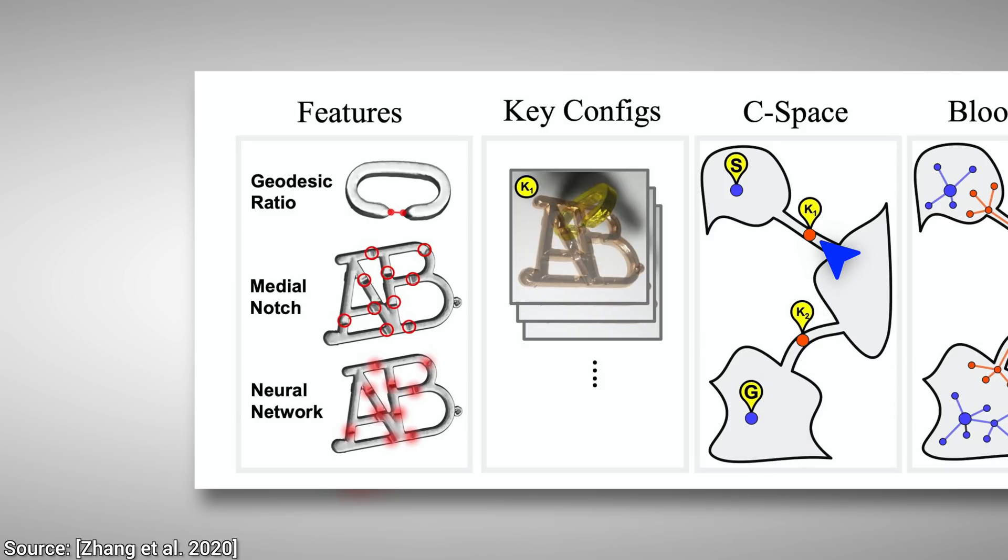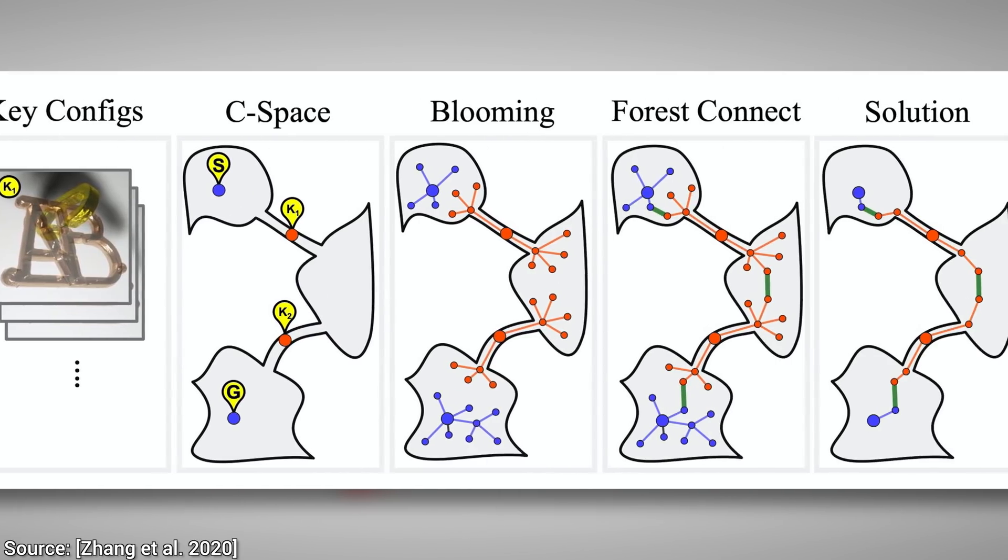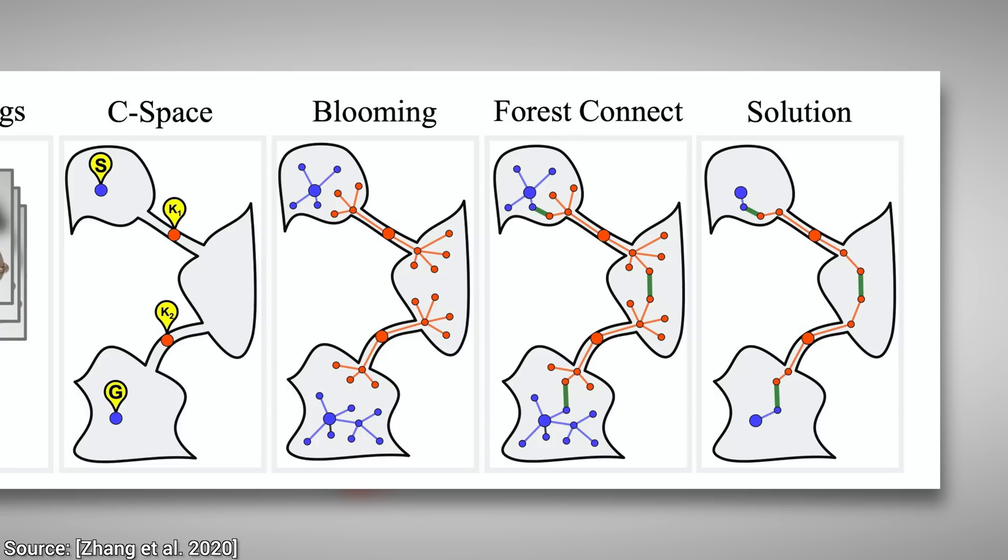Then, a set of collision-free key configurations are identified, after which the blooming step can commence. So, what does that do? Well, the goal is to be able to go through these narrow tunnels that represent tricky steps in the puzzles that typically require some unintuitive rotations. These are typically the most challenging parts of the puzzles, and the blooming step starts from these narrow tunnels and helps us reach the bigger bubbles of the puzzle.